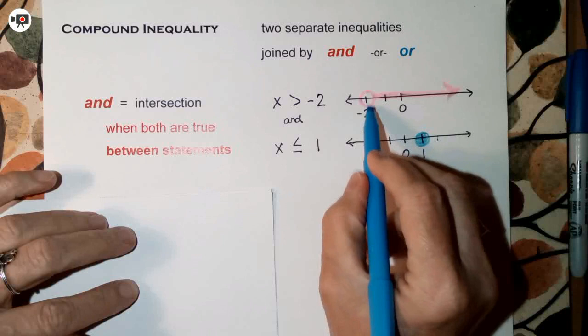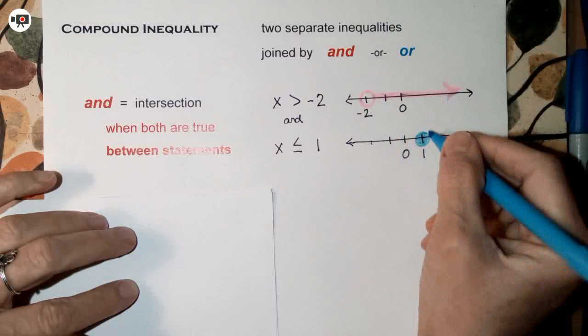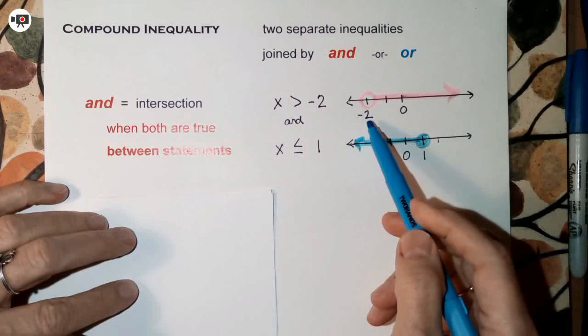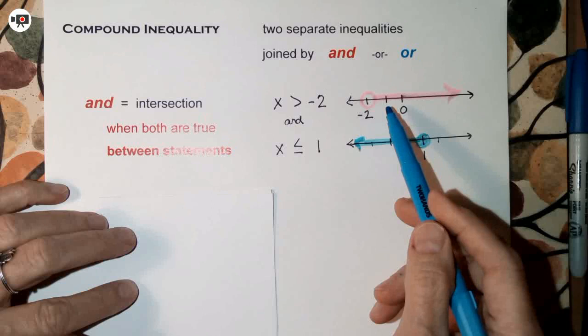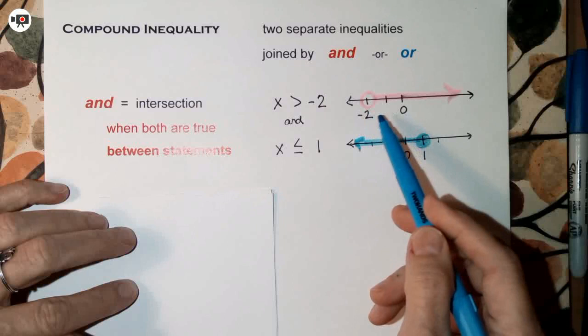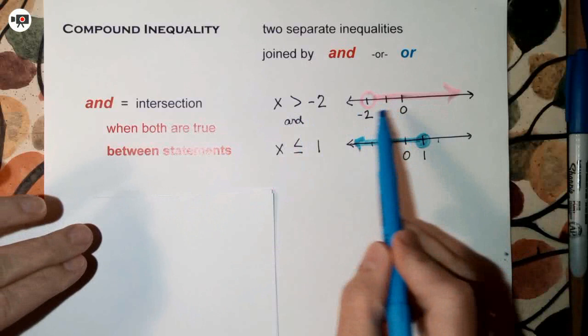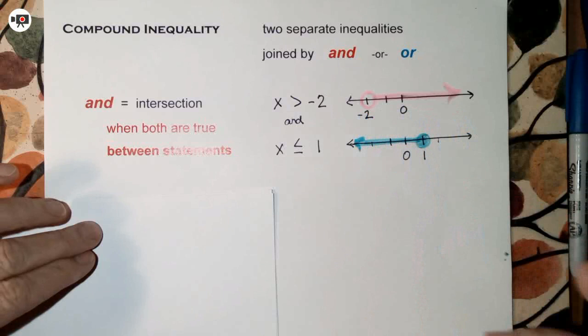Notice the open circle at negative 2 leaves a hole — negative 2 itself is not included. You might be tempted to start at negative 1 and bubble that in, but that would exclude all values between negative 1 and negative 2, like negative 1.5 or negative 1.7. The circle must go around the boundary value, which is negative 2, not negative 1.